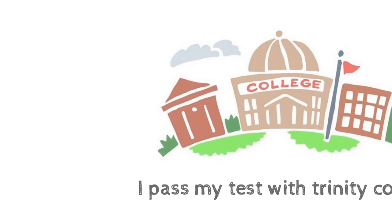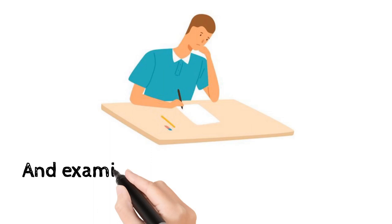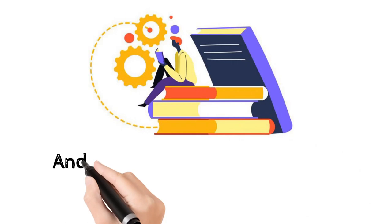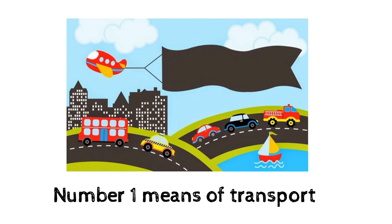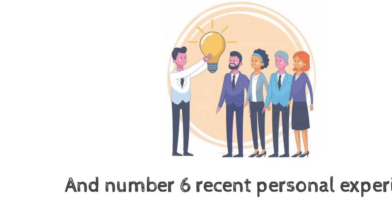I passed my test with Trinity College. The Trinity College test is an easy test — you choose your topic and title, and the examiner asks you questions about your topic for 5 minutes. After that, the examiner asks questions from 6 different subjects: No. 1 Means of Transport, No. 2 Festivals, No. 3 Special Occasions, No. 4 Entertainment, No. 5 Music, and No. 6 Recent Personal Experience. Let's start the video with questions about 'My Family.'